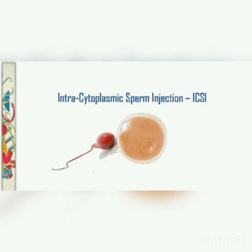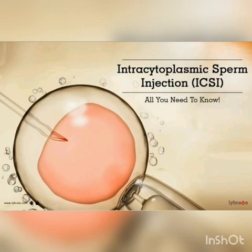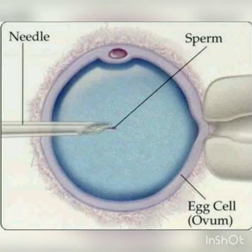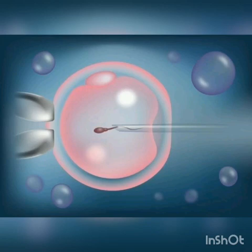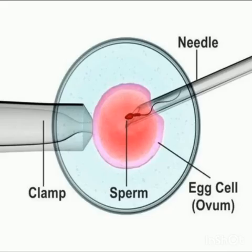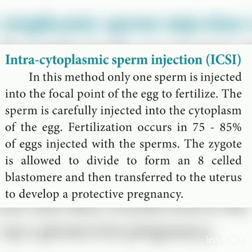Next is intracytoplasmic sperm injection, ICSI. In this method, only one sperm is injected into the focal point of the egg to fertilize it. One fertile egg and one fertile sperm are taken, and the sperm is carefully injected into the cytoplasm of the egg. Fertilization occurs in 75 to 85% of eggs injected with sperms. The resulting zygote is allowed to divide to form an 8-cell blastomere, then transferred to the uterus to develop.